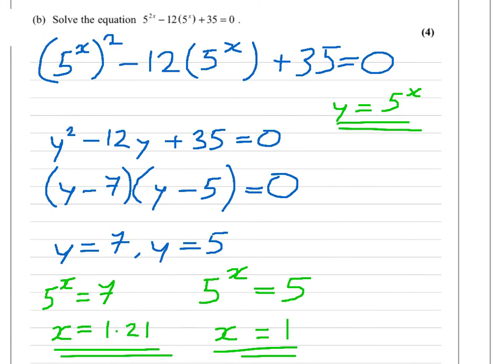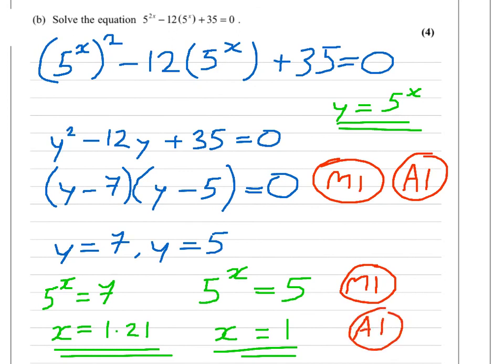Four marks. It didn't take four minutes. The marks here, there's a method mark for realizing it's quadratic and factorizing. You don't have to change the variables, but you can do. And if you factorize correctly, you do get an accuracy mark. Then there is a method mark for actually trying to solve them in any way, shape, or form. And an accuracy mark for getting both of those correct.